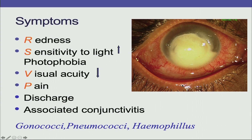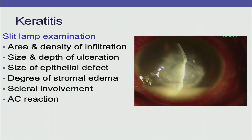The symptoms we are all aware of include redness, photophobia, decreased visual acuity, pain, discharge, and associated conjunctivitis. Conjunctivitis occurs more often when the organism is gonococci, pneumococci, or Haemophilus.